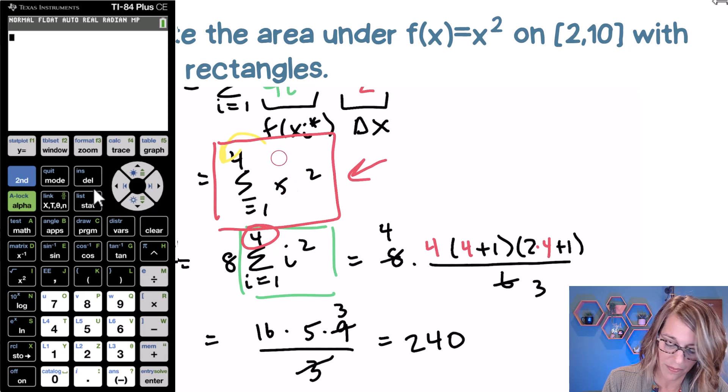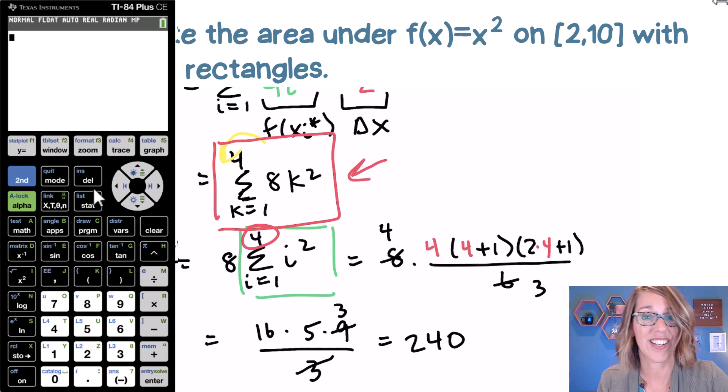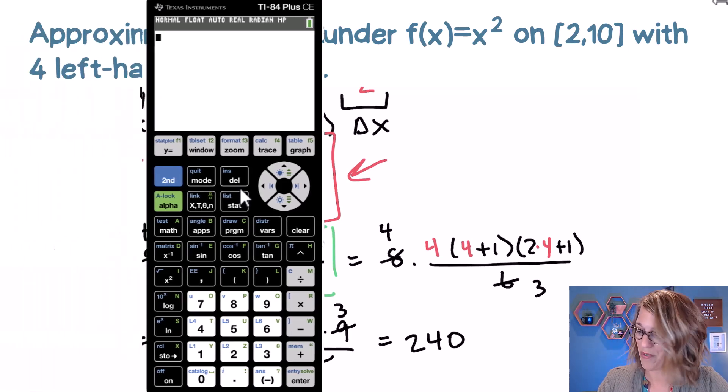So let me get rid of this as well. And let's replace that with a k. So we're going to end up with an eight k squared instead. And that summation is going to go k as our index equals one, two, four.